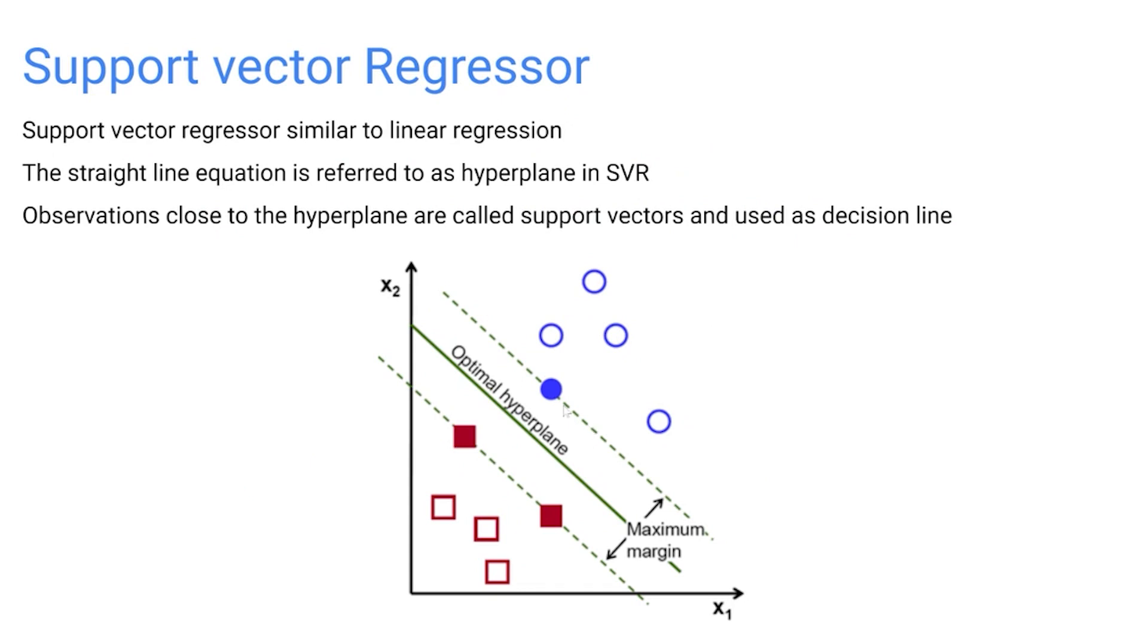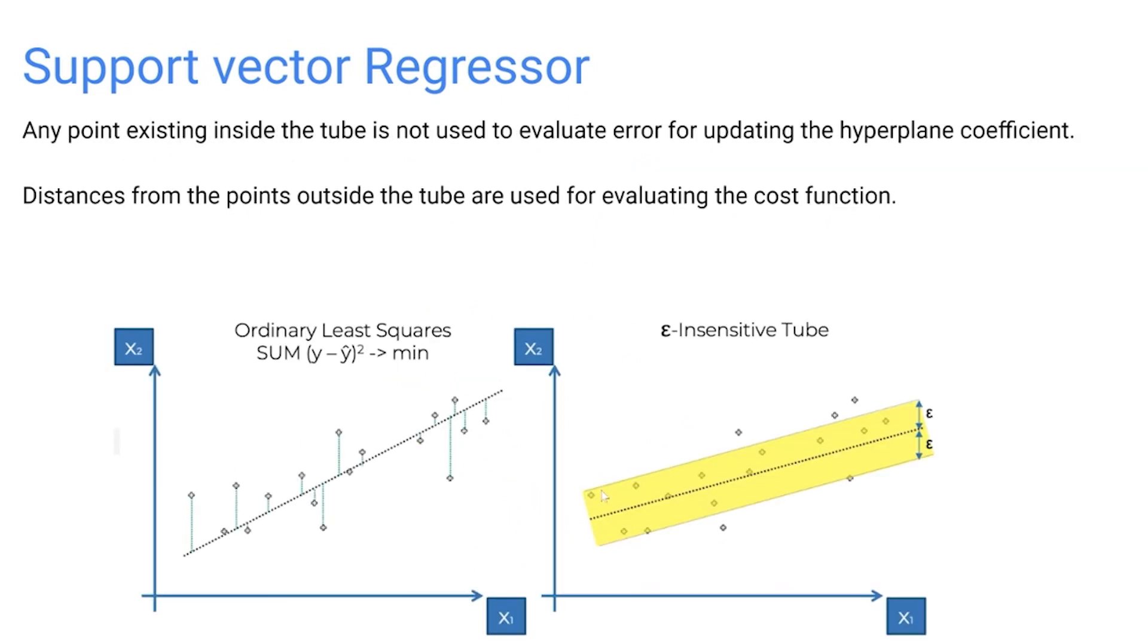The observations close to the hyperplane are called support vectors and they are used as a decision line. Any point existing within this tube is not used to evaluate the error for updating the hyperplane coefficient. Previously in linear regression we used the cost function to update the alpha and beta components.